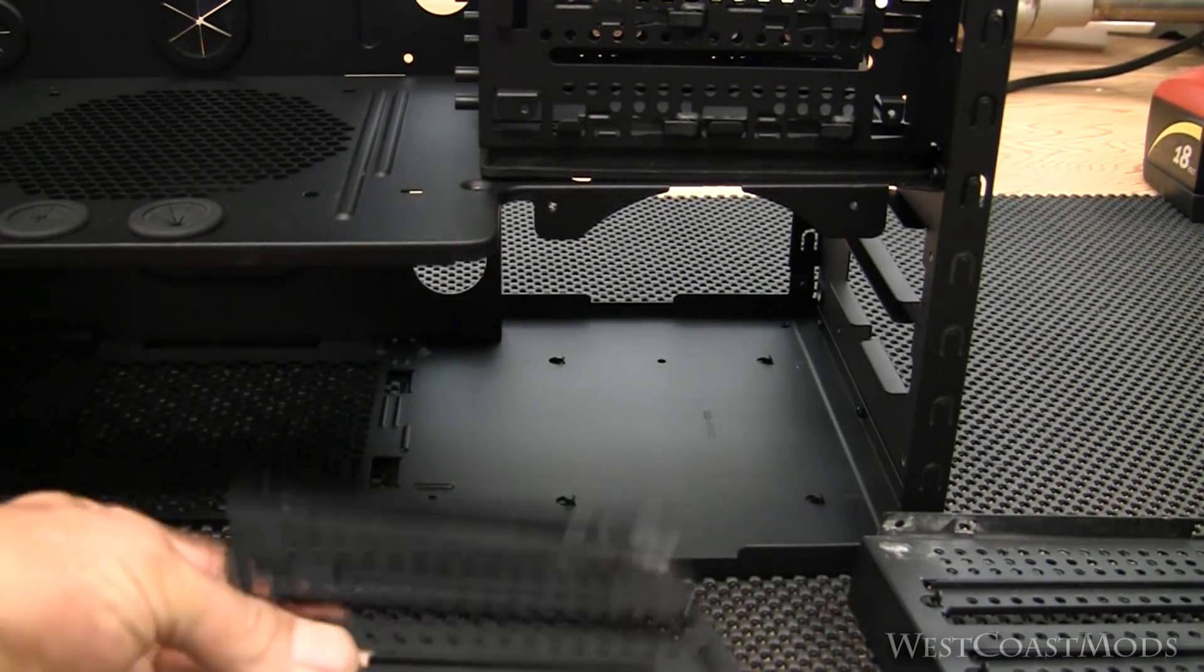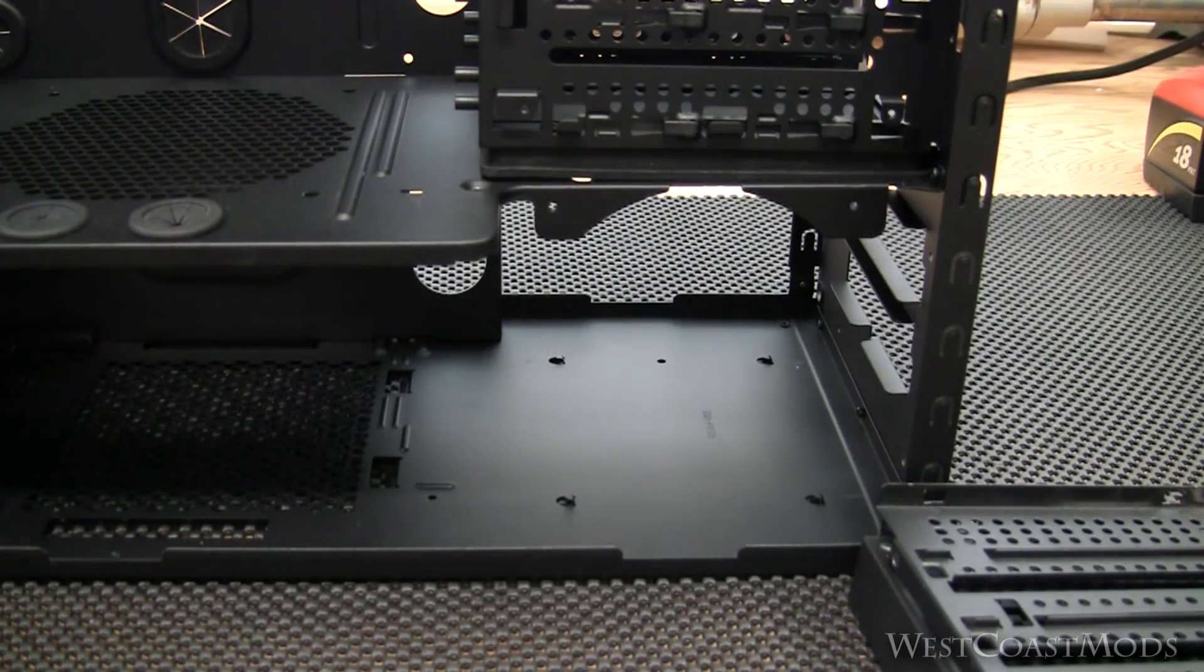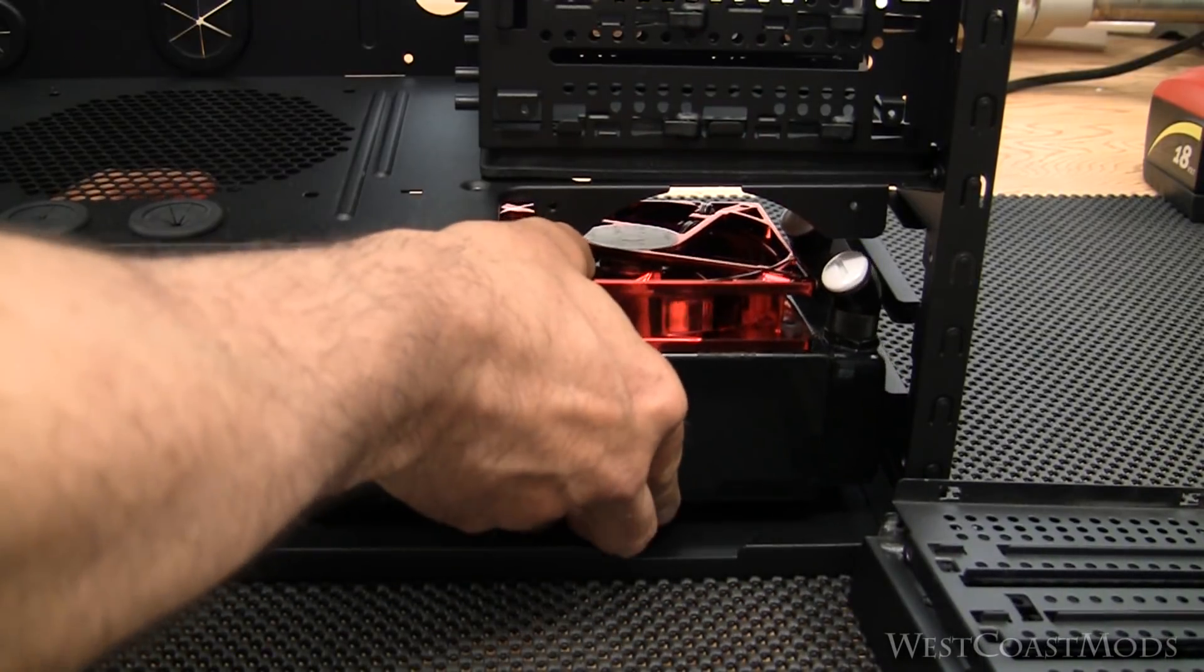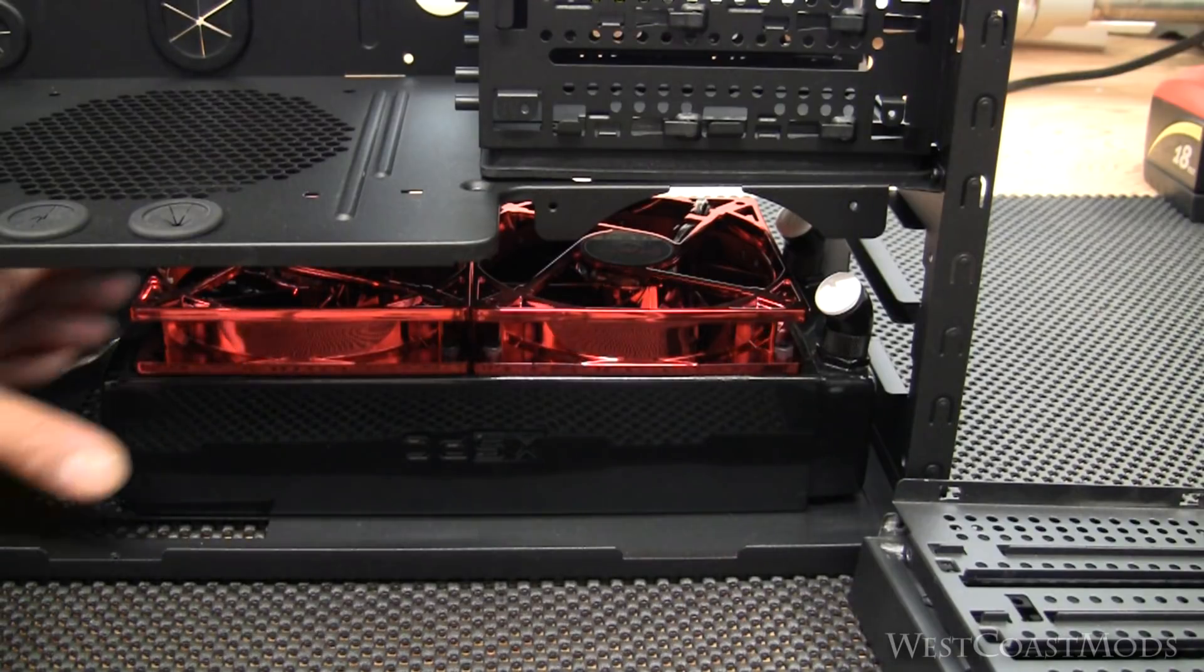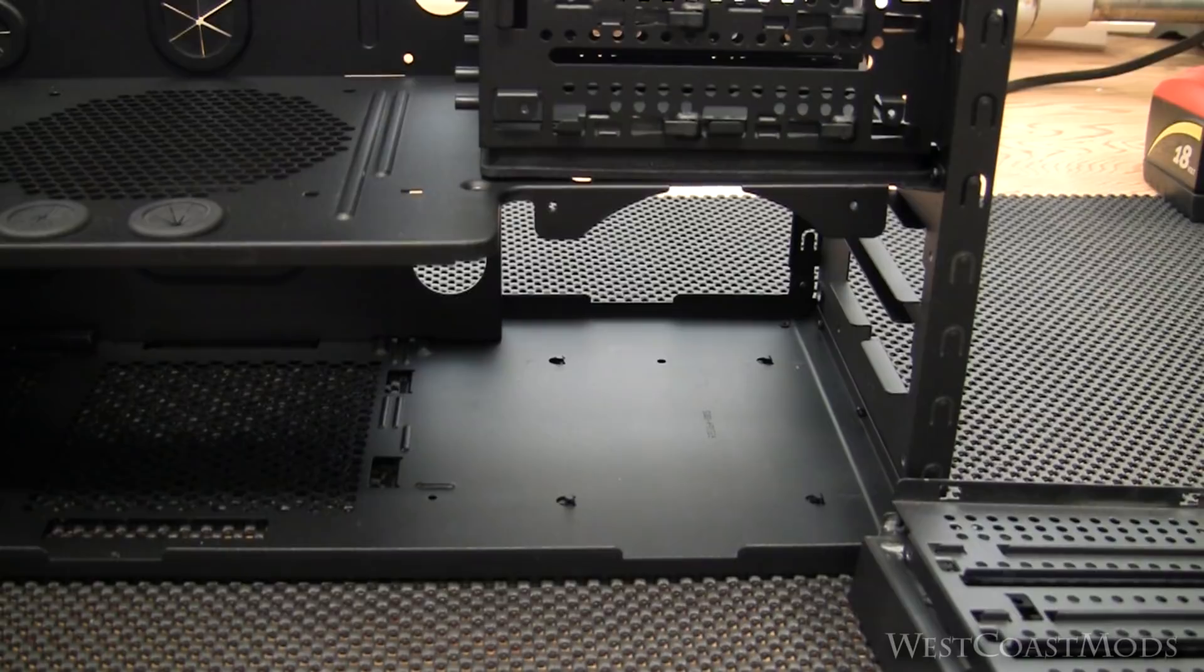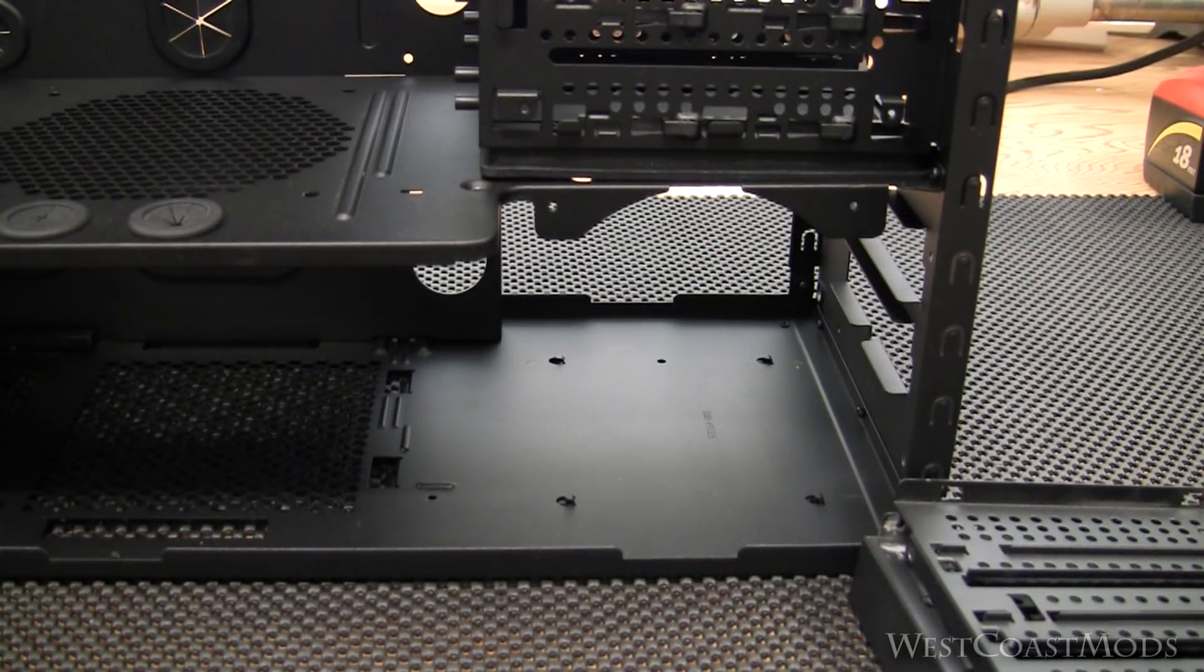I showed how we removed the hard drive brackets from the bottom down here, allowing us now to fit the 240 rad right in there. What we're going to do today is lay out the vent holes here at the bottom and cut them out so we can mount the rad.